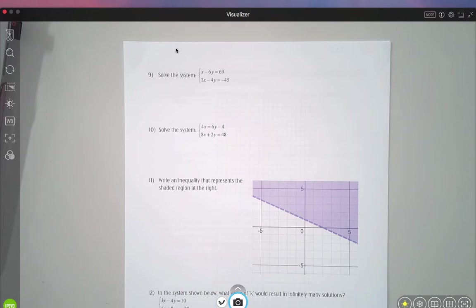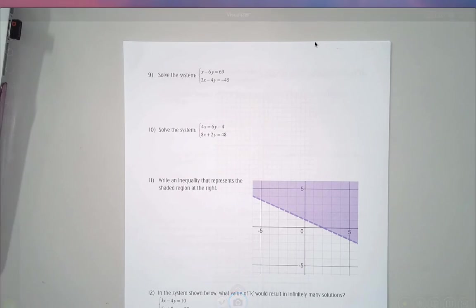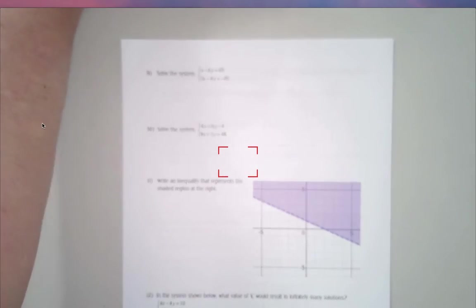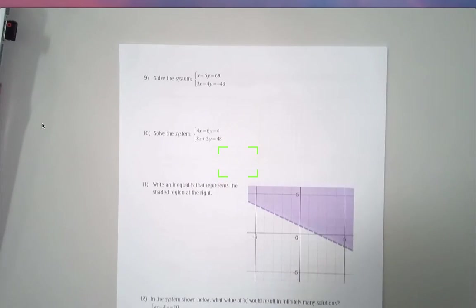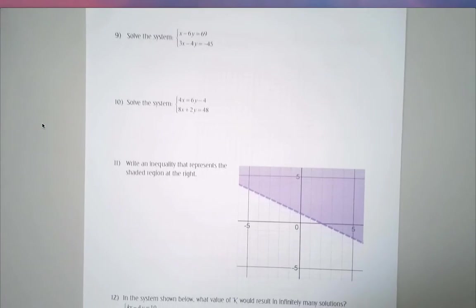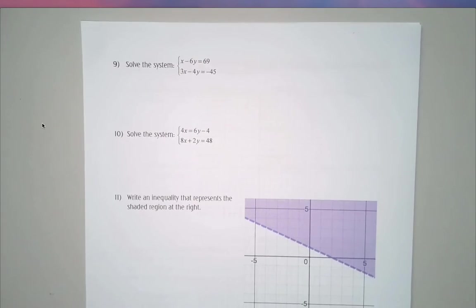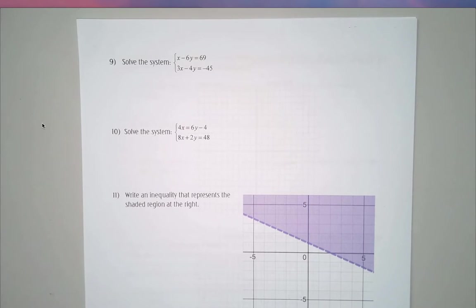Hello, everyone. This is the second page of the Chapter 5 test review for Algebra 1a. This is on systems of equations and inequalities. I'm trying to get this thing to focus a little better for you.